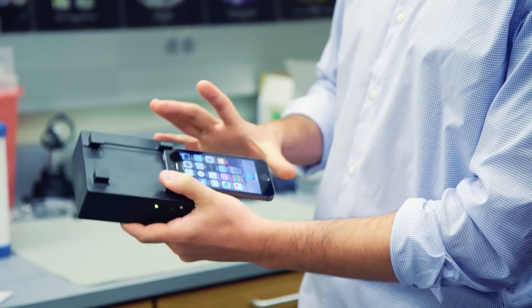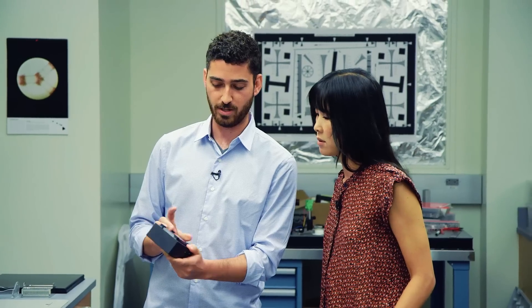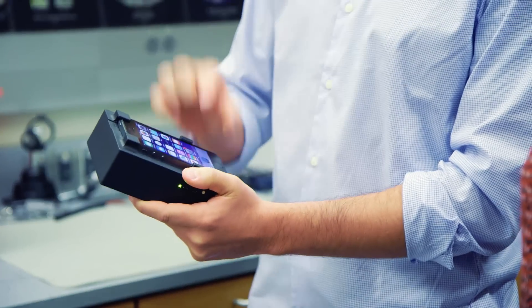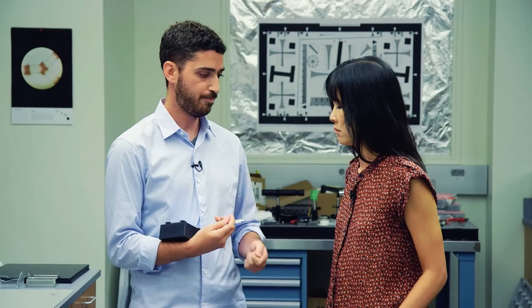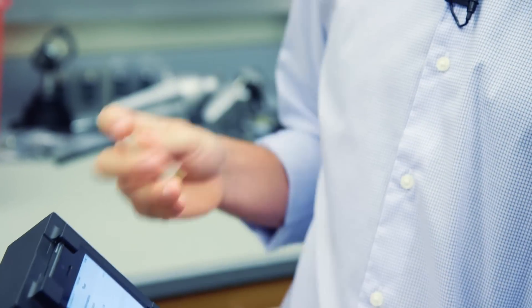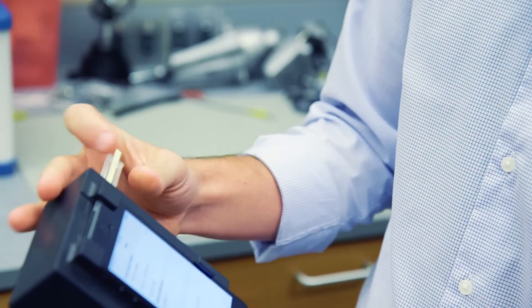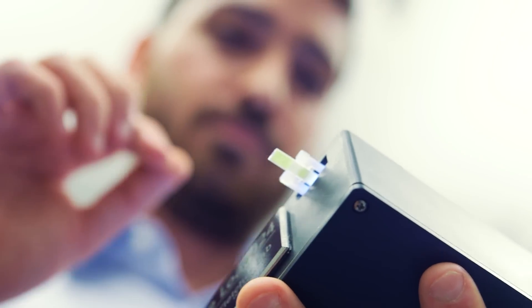So the way this works is you slide the phone into the holder here, and then we run an app, just like you would if you were loading up Facebook or Gmail. The operator would take somebody's finger, prick their finger, and then load a small volume of blood directly into this glass capillary. Then all you do is you insert this into the side of the device, and you can begin a test.